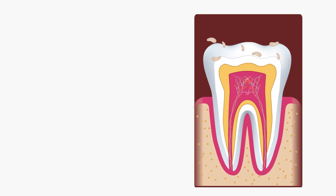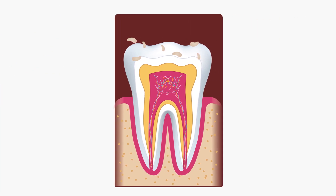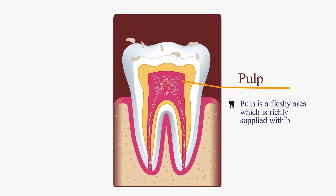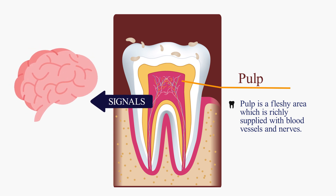Now let's talk about the pulp. The pulp is a fleshy area which is richly supplied with blood vessels and nerves. This region sends direct signals to the brain, so whenever we have pain, the brain gets its signal from this region.